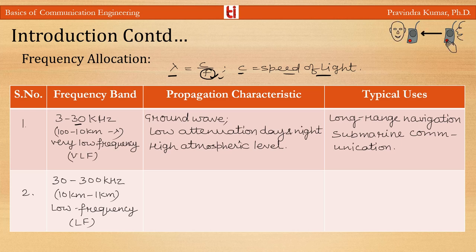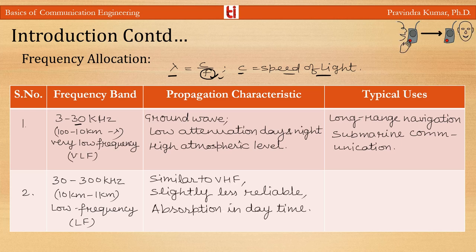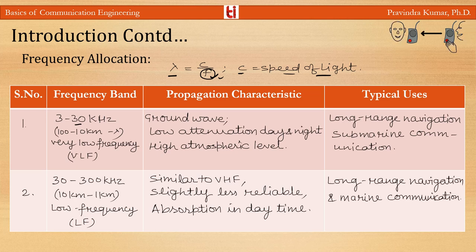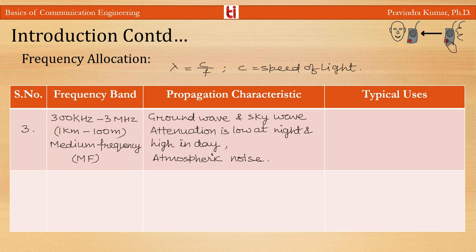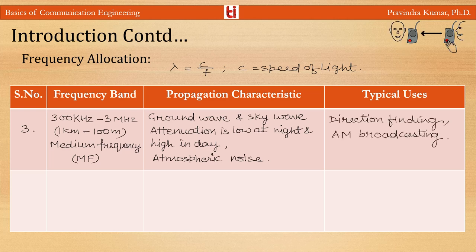The LF band has propagation characteristics similar to VLF but with slightly less reliable absorption in daytime. The band 300 kHz–3 MHz (1 km–100 m) is the Medium Frequency (MF) band. Here, ground wave and sky wave attenuation are low at night and high during the day; atmospheric noise is present. This band is used for direction finding and AM broadcasting. The band 3–30 MHz (100 m–10 m) is the High Frequency (HF) band, where ionospheric reflection varies with time of day and season, with low atmospheric noise near 30 MHz.